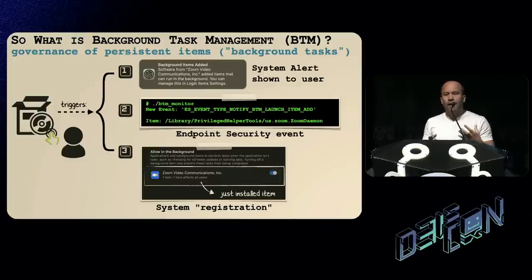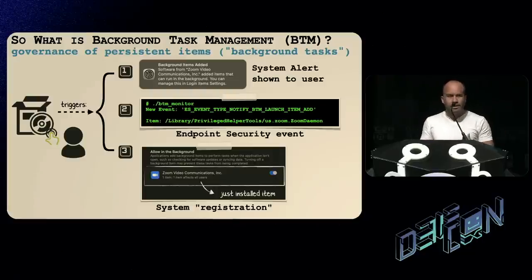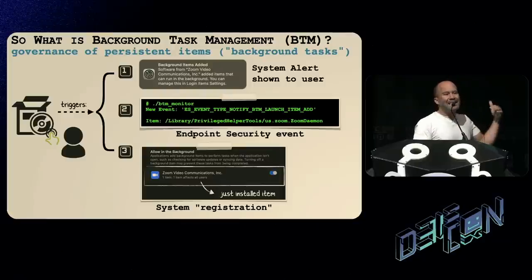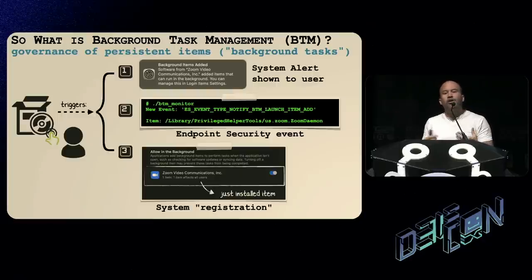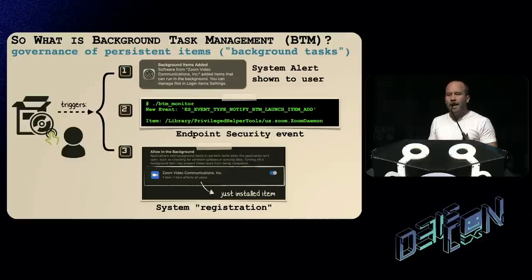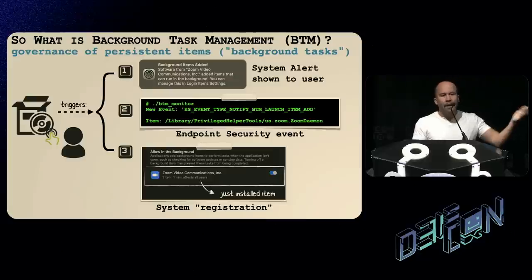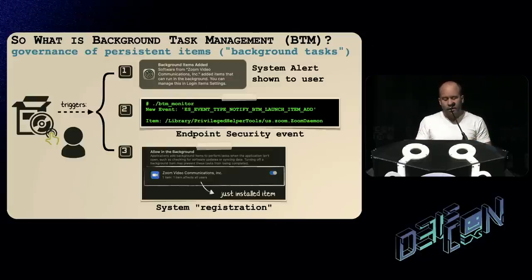When an item persistently installs itself, three visual things related to BTM happen. First, on the most recent version of macOS, there's a system alert informing the user that whatever they just installed is persisting — something just added itself and is going to be automatically restarted. Second, there is a security message broadcast that security tools can register for — a programmatic notification saying something just persisted. Third, that item is registered in the BTM database.